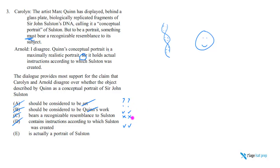So E — is an actual portrait of Solstyn — here Carolyn says nope, and Arnold says yep. This sort of chart is what we use. You learn this when you look at the lessons on how to do point-and-issue questions. This chart is what we use to come to the right answer choice.